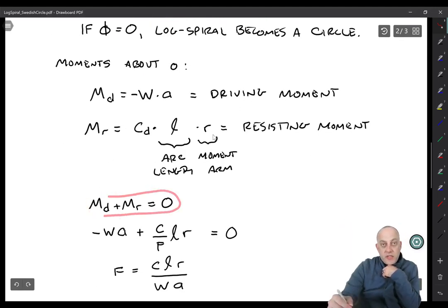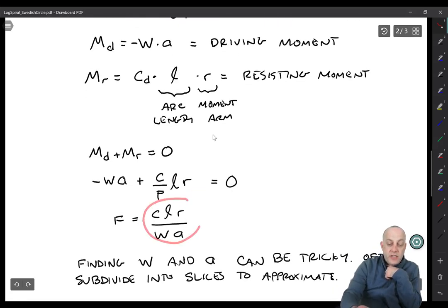So now you can note that by equilibrium, M D plus M R has to be equal to zero. So you get minus W A plus C over F, L times R is equal to zero. And if you solve for the factor of safety, you get C L R over W A.